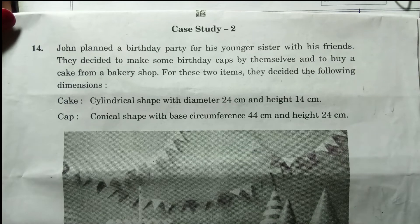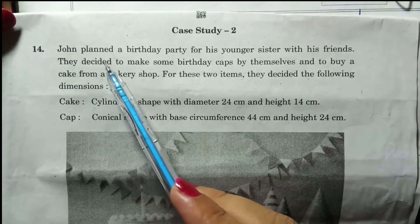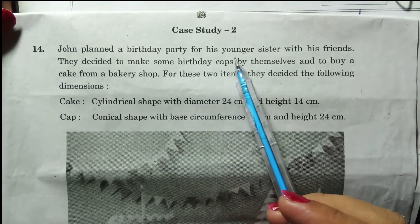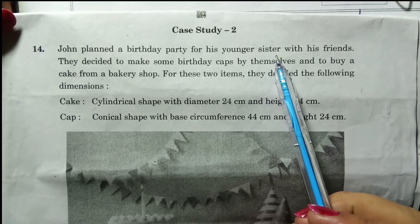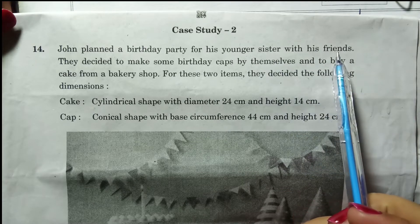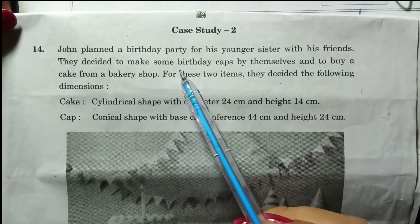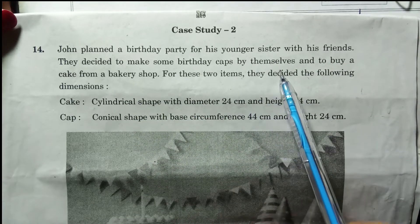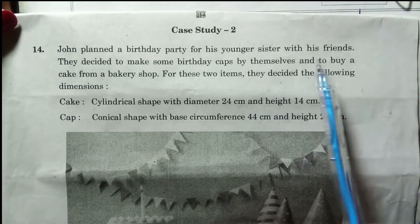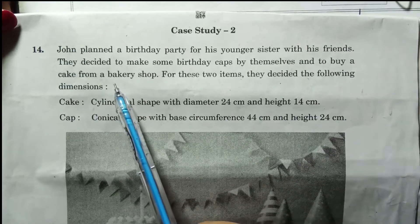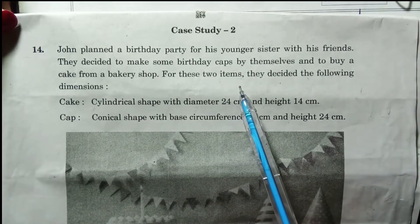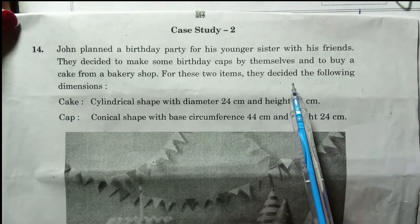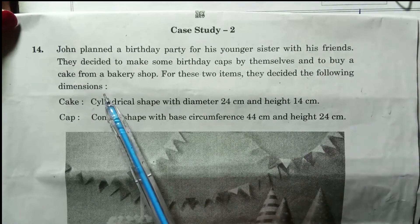We have a case study. Johan planned a birthday party for his younger sister with his friends. They decided to make some birthday caps by themselves and to buy a cake from a bakery shop. For these two items, they decided the following dimensions.